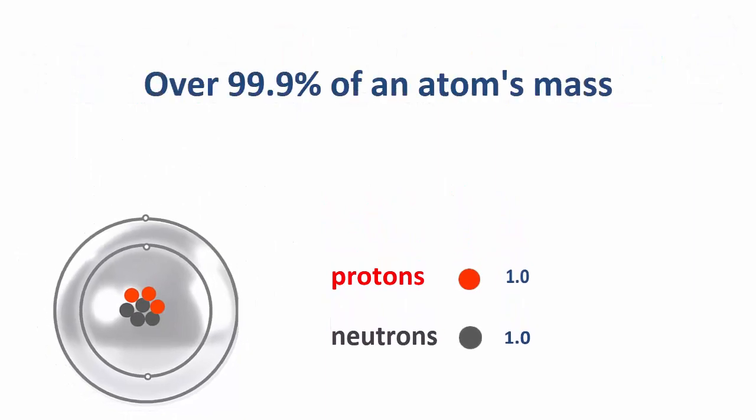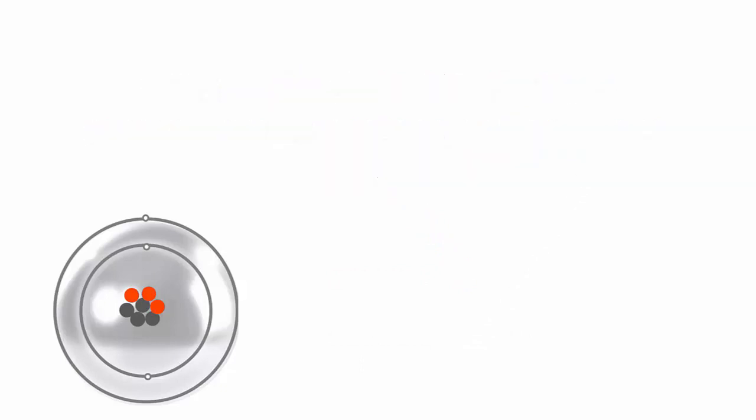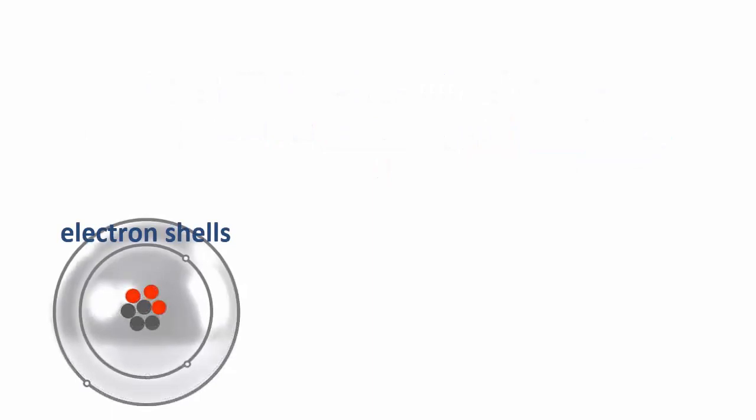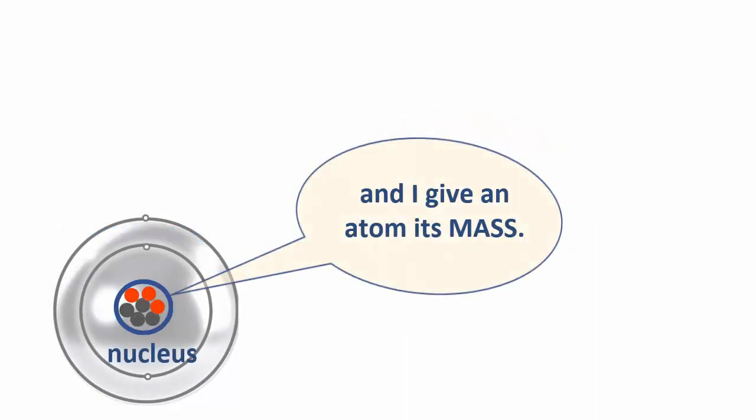Over 99.9% of an atom's mass comes from its protons and neutrons. We can say that most of an atom's size comes from its electron shells, whereas most of its mass comes from its nucleus.